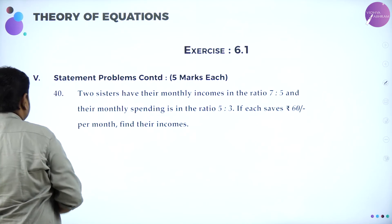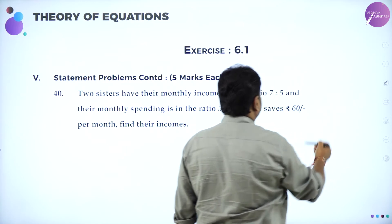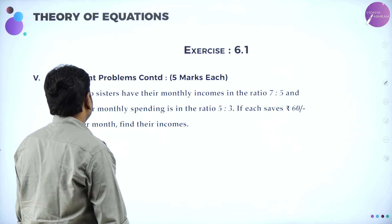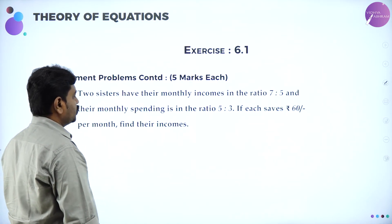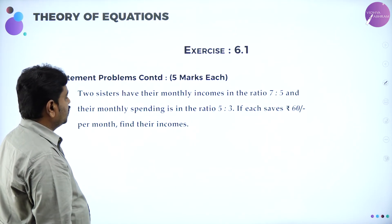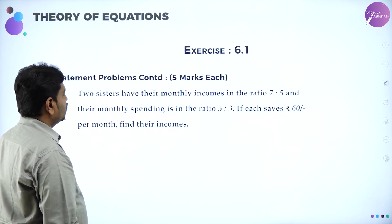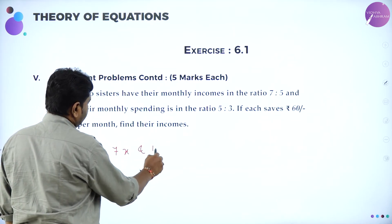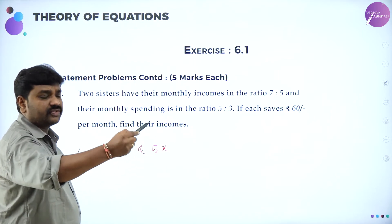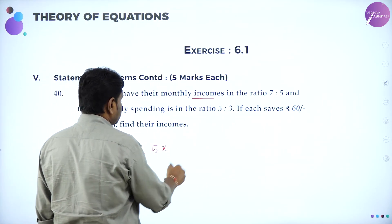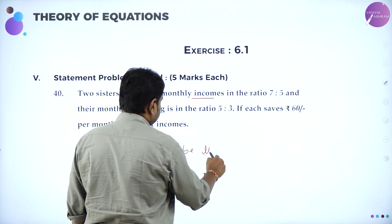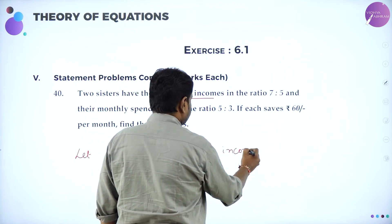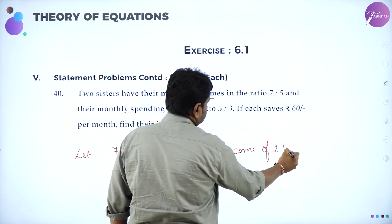Next, we have two sisters. Whenever they give a ratio, you can take unknown x or k. Two sisters have their monthly income in the ratio 7 is to 5, and their monthly expenditures are in the ratio 5 is to 3. Each saves 60 rupees per month. Find their income. Income ratio is given, so let 7x and 5x be the income of the two sisters.